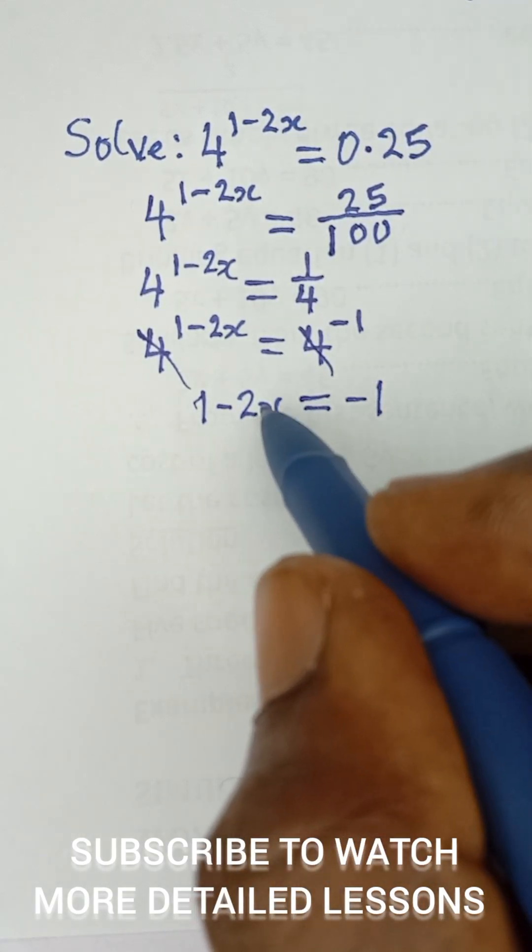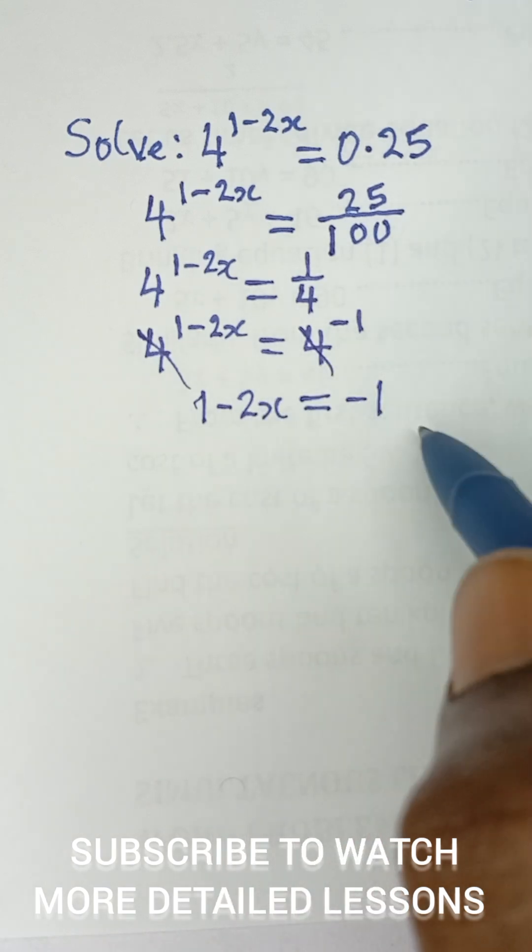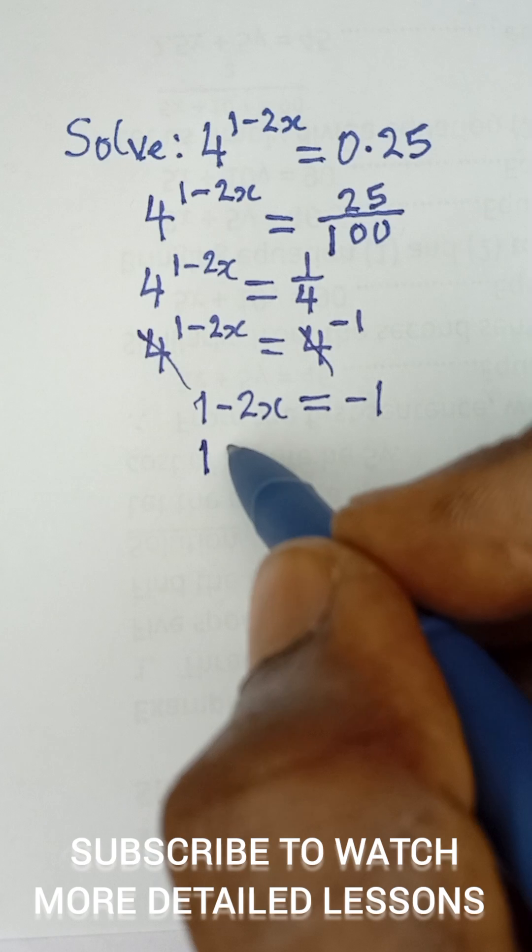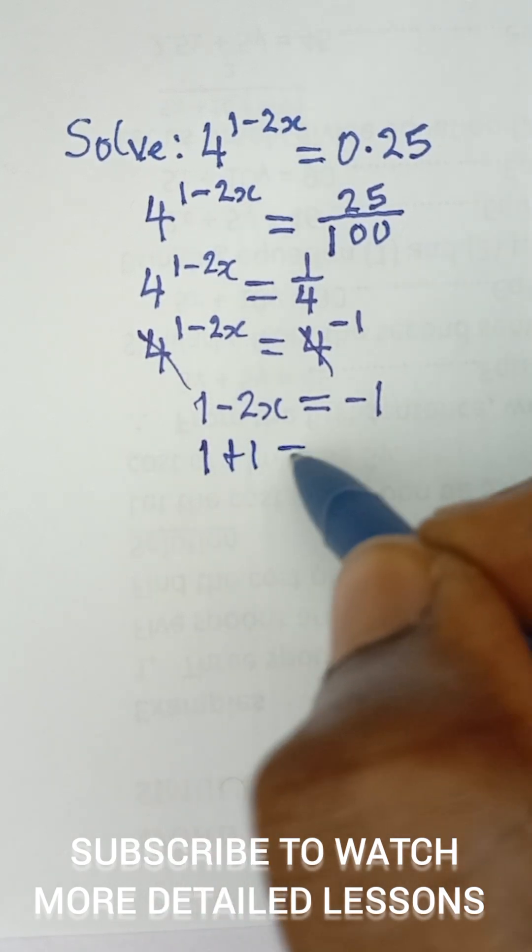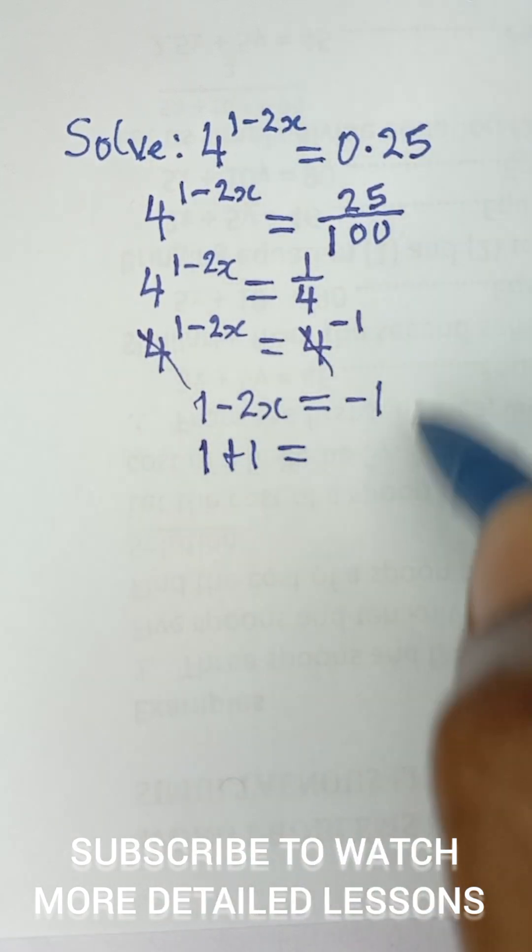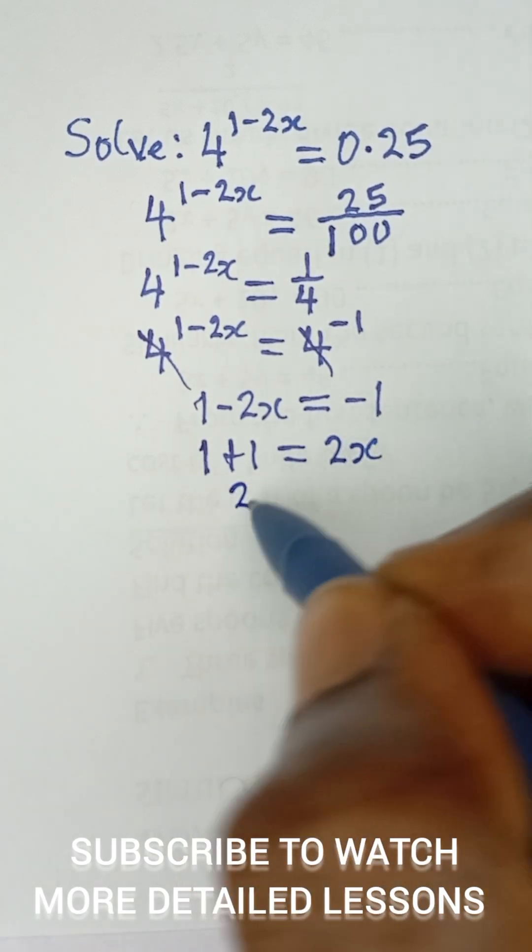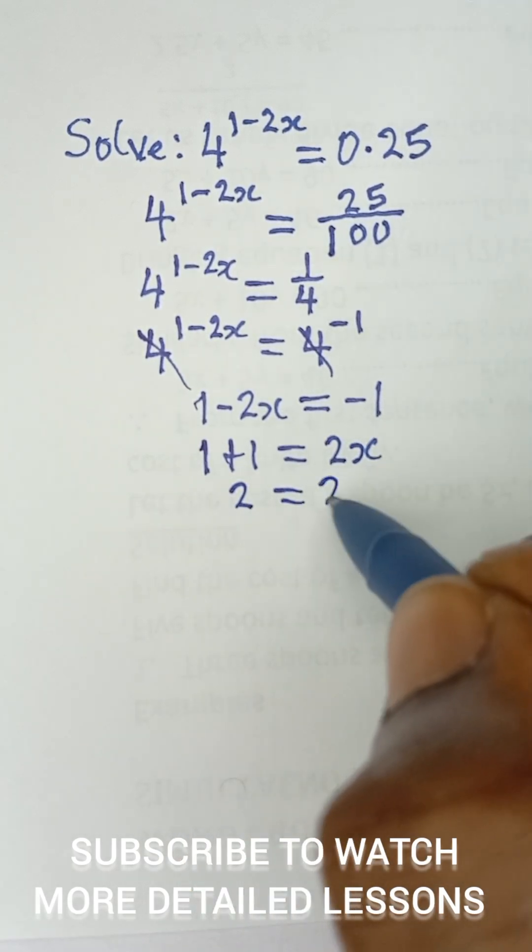And then I can take this negative 2x to that side, and I bring this negative 1 to this side. So I have 1 negative 1 coming to this side become positive 1, is equal to negative 2x going to that side becomes positive 2x. So I have 2 is equal to 2x.